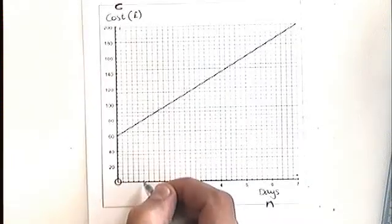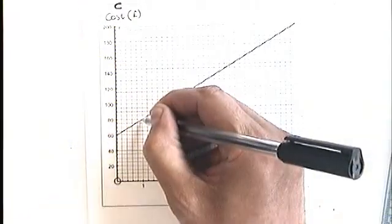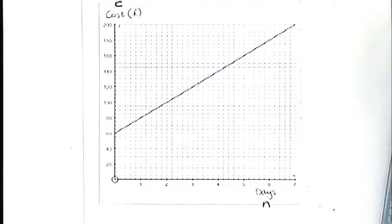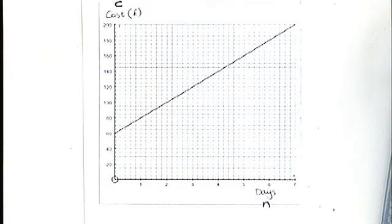For example, one day would cost you £80 just reading from the graph. So you could read from the graph, but quite often the question will ask you, what is the equation of the line? What's a formula that links the cost and the number of days?